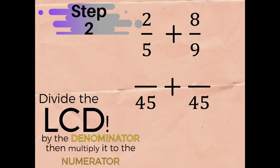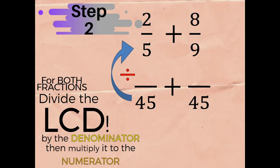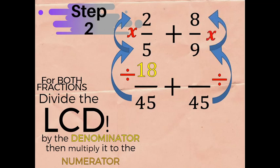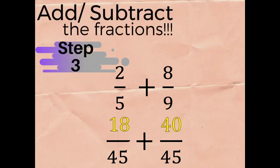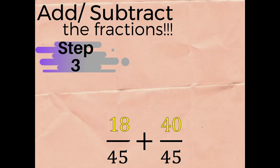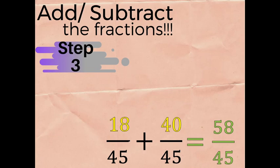Since we have the LCD, we can now divide it by the denominator, then multiply the answer to our numerator. Using the wings of the butterfly: 45 divided by 5 gives us 9, times 2 equals 18. On the other side, 45 divided by 9 gives us 5, times 8 equals 40. Step three: add or subtract the fractions.